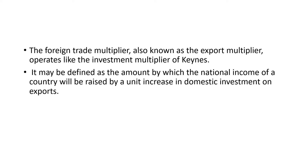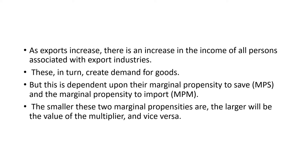This concept is also known as export multiplier and it operates like the investment multiplier of Keynes. It is defined as the amount by which the national income of a country would be increased by a unit increase in the domestic investment on exports. As exports increase, there is an increase in the income of all persons associated with the export industries. This in turn leads to creation of demand for commodities, and this is dependent upon the marginal propensity to save as well as marginal propensity to import, indicated by MPS and MPM respectively.